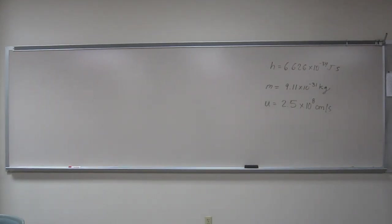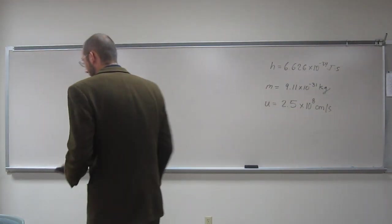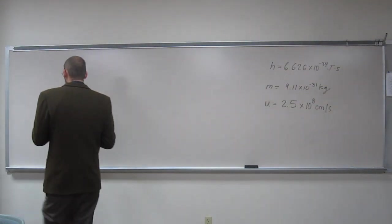This one says, an electron moves with velocity of 2.5 times 10 to the 8th centimeters per second. What is its wavelength?